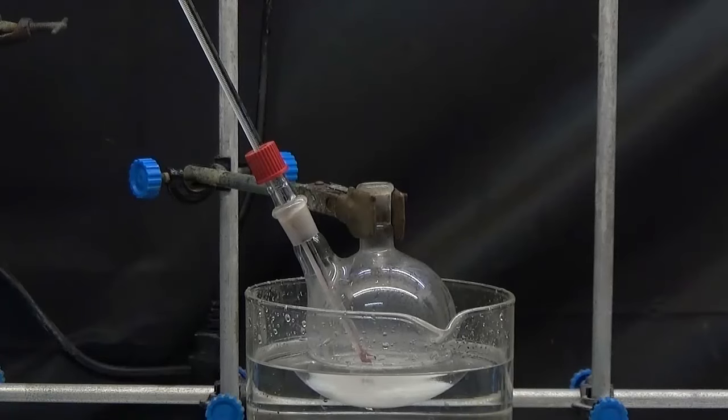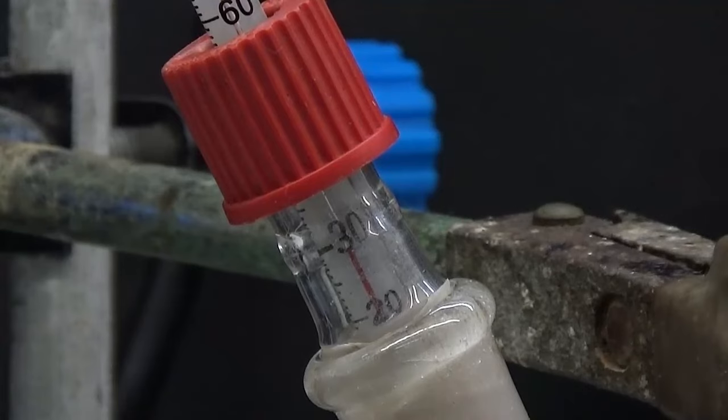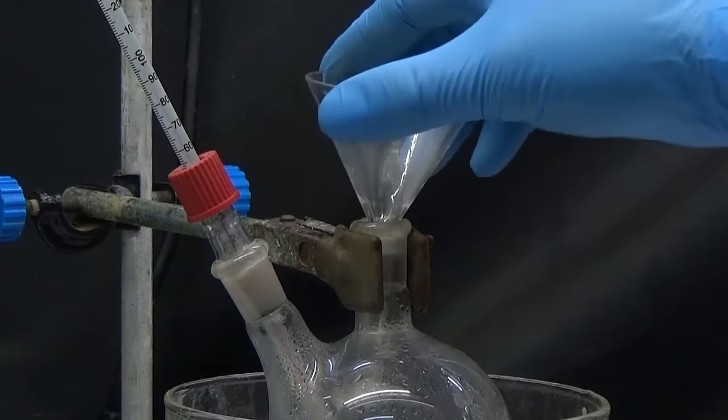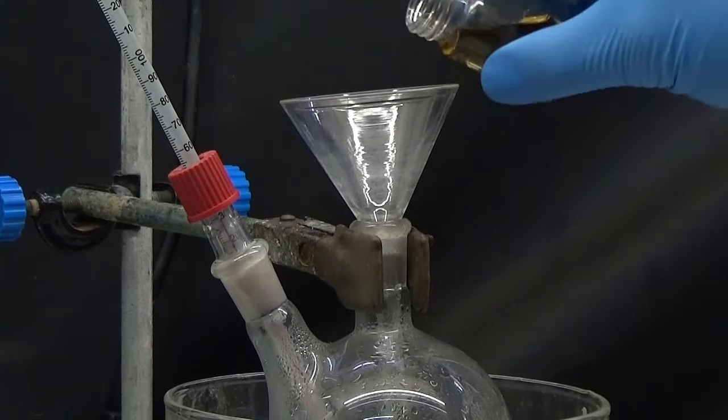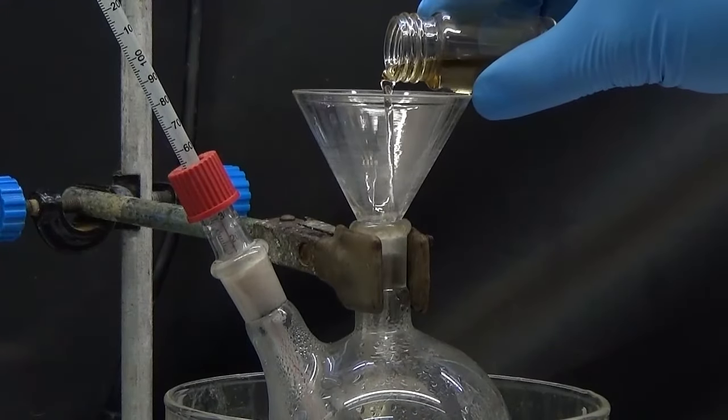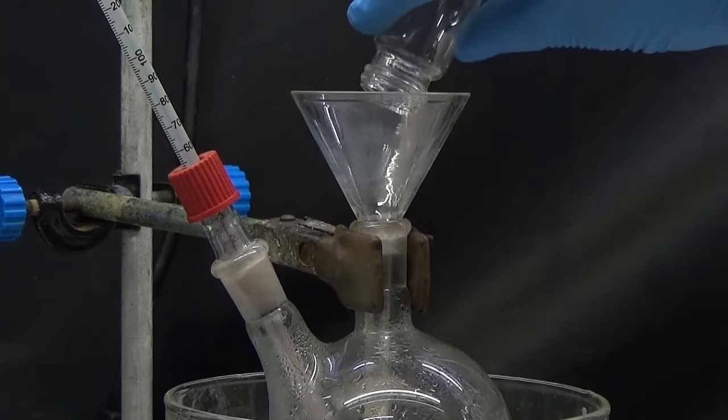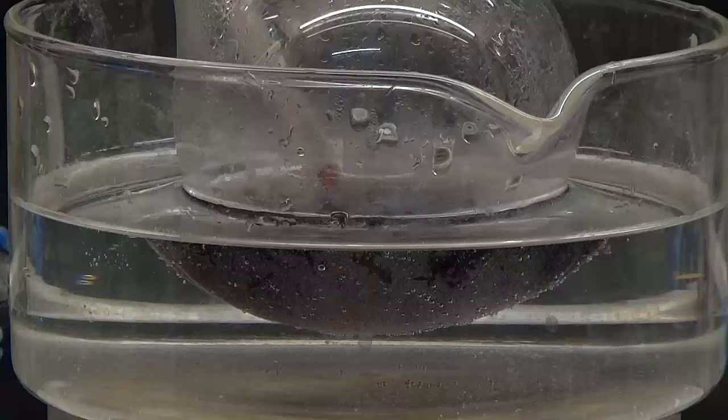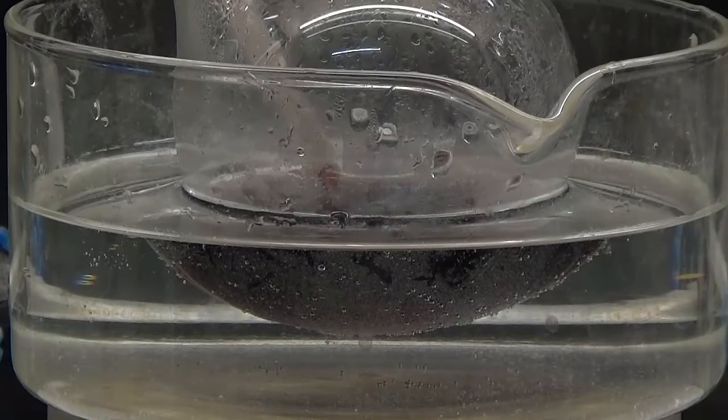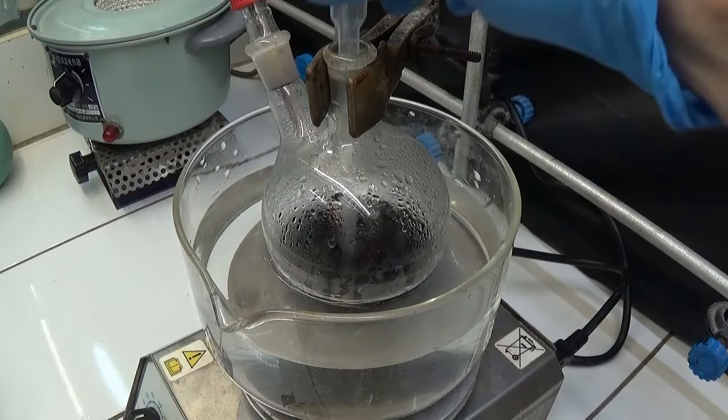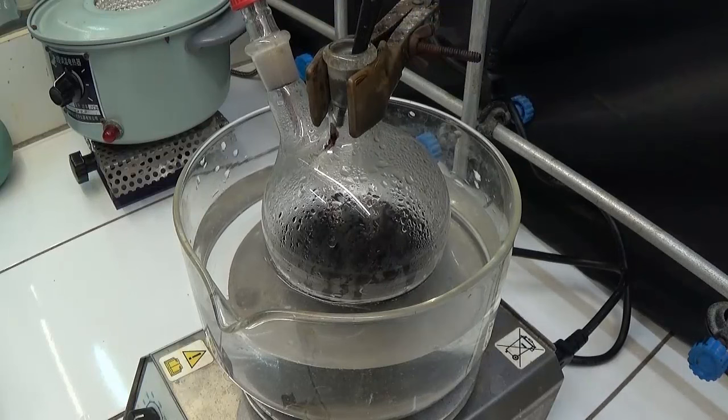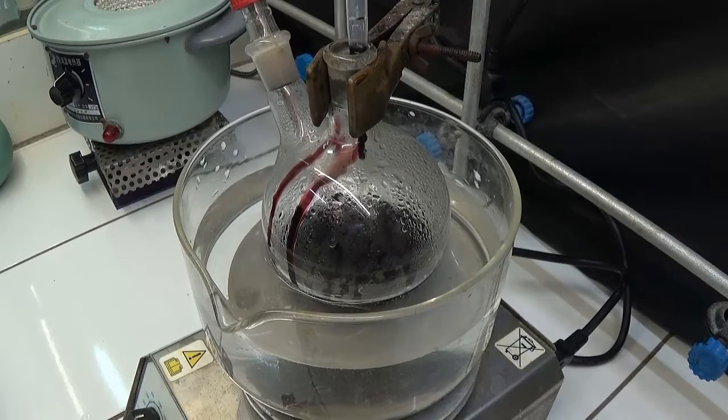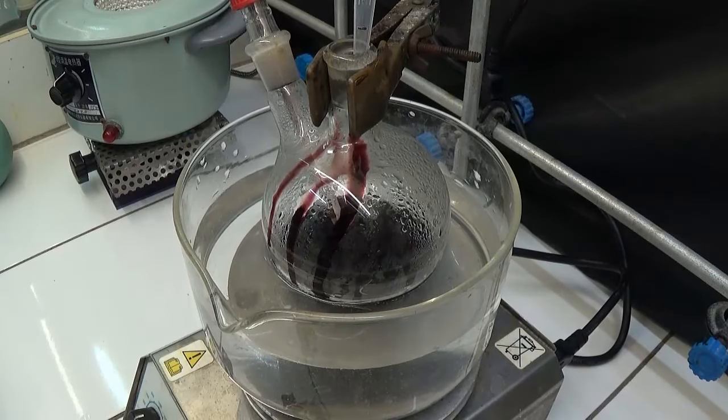Heat gently until all solids dissolve with a hot water bath and cool to 30 degrees Celsius. Add 16.4 grams of furfuryl alcohol and wait until the temperature rises. Do not allow the temperature to exceed 60 degrees. Keep the ice and water bath nearby if the reaction gets violent. With addition of furfuryl alcohol, it turns red. The temperature is only 50 degrees.